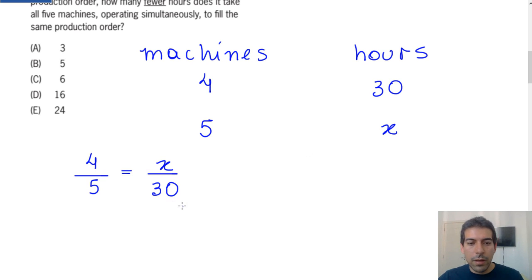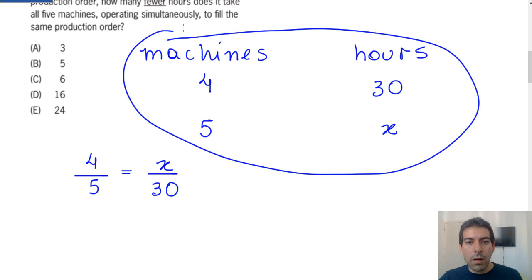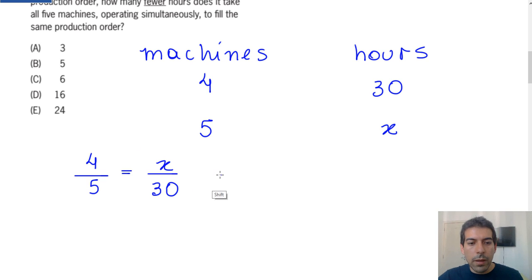We invert here because the quantities involved in this question are inversely proportional. So we get that 5 times X is 5X, and 4 times 30 equals 120.